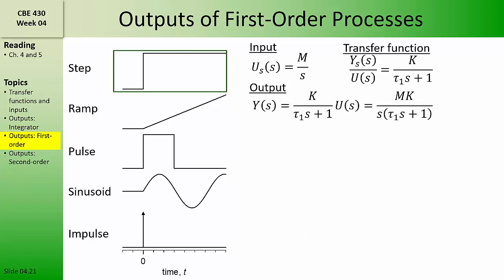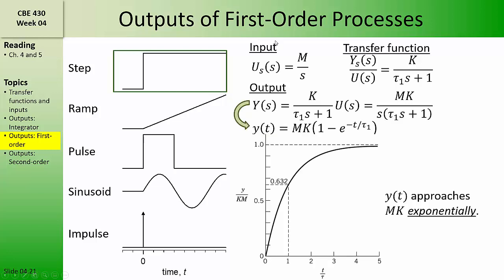Next let's feed the step input to a first-order process. The step input is m over s and our first-order transfer function is represented by a gain divided by tau s plus one. Multiplying these together, the output is mk over s times (tau s plus one). Using table 3.1, we can invert this back to the time domain and we find a function that exponentially decays to a new steady state. The y-axis is scaled as y over km and the time axis is scaled as t over tau, so the curve is a master curve describing all such exponential decays. All step inputs to first-order processes result in an exponential decay to a final steady state with a normalized value of 1.